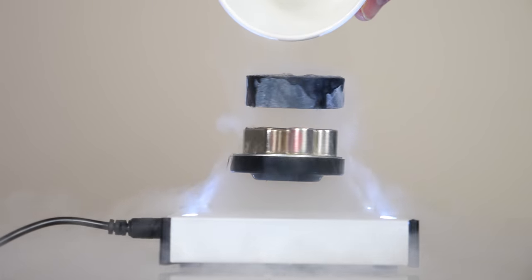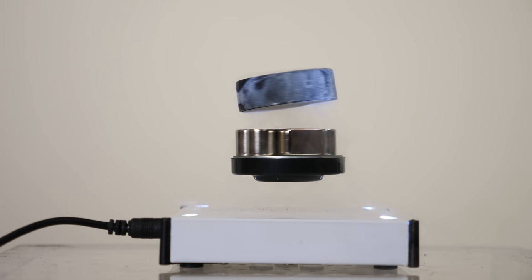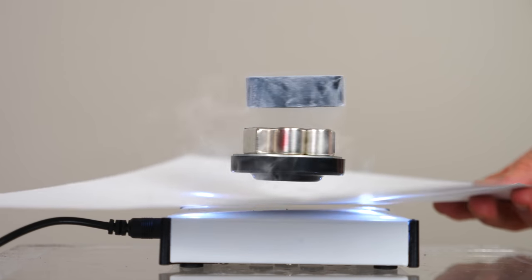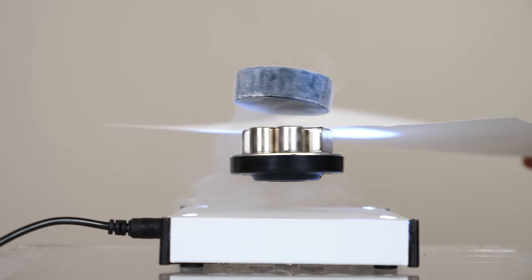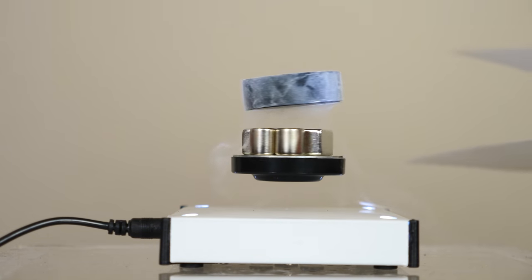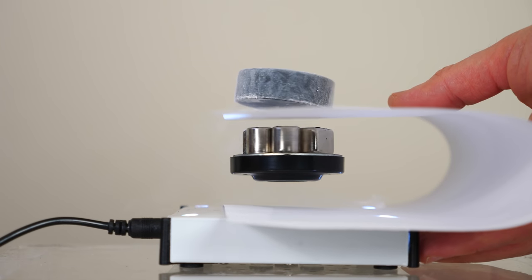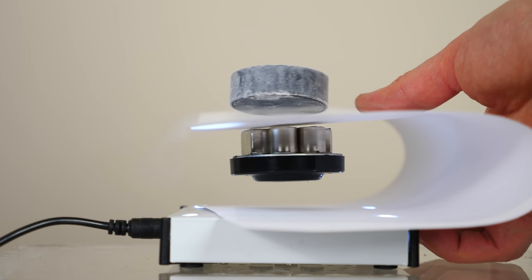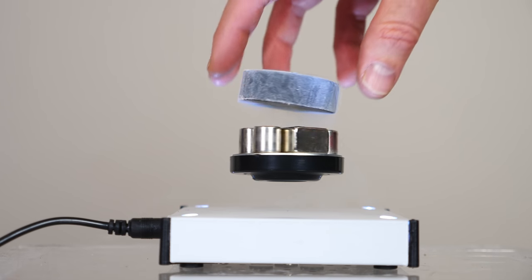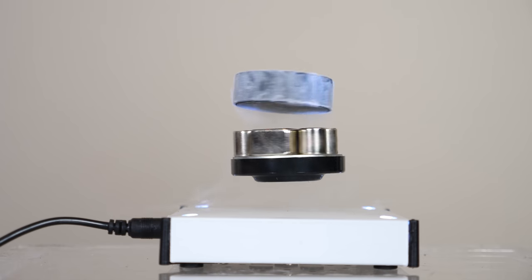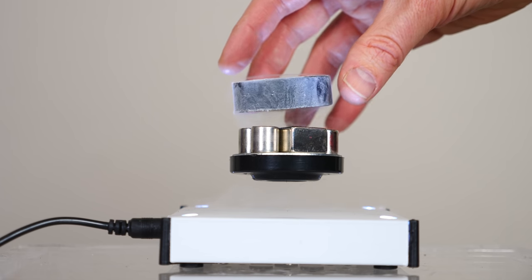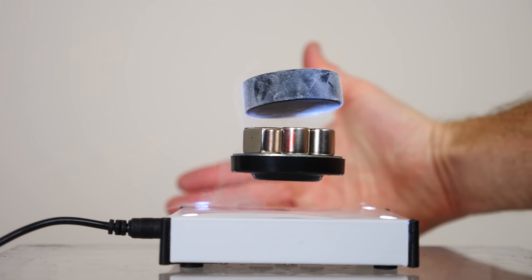So the reason this type two superconductor is able to levitate on top of here is called flux pinning or quantum locking. And what happens is the magnetic field lines of the magnets below the type two superconductor can only penetrate it at certain spots. So basically the magnetic field lines thread through it and lock it in place. So the superconductor is actually pinned to the magnets even though it's levitating. So that means that when I turn the superconductor it will turn the magnets below it. Whereas for the levitation base below it's not locked to the magnet above it so it can spin freely.